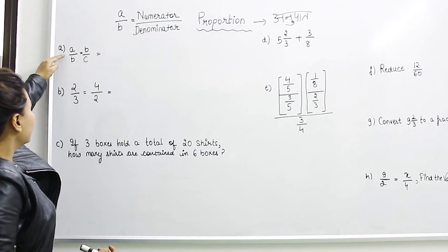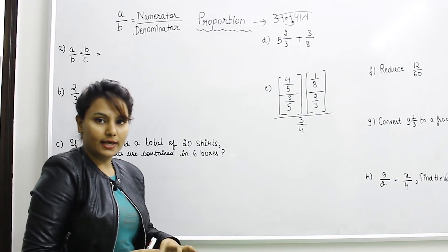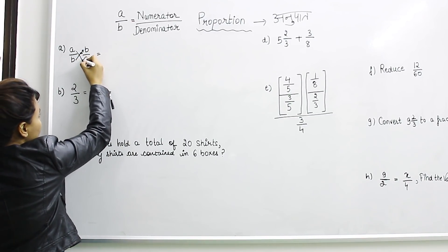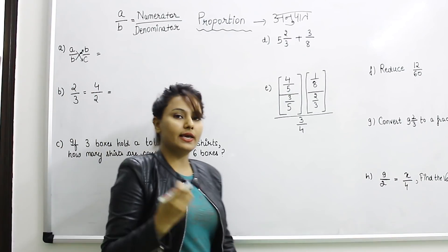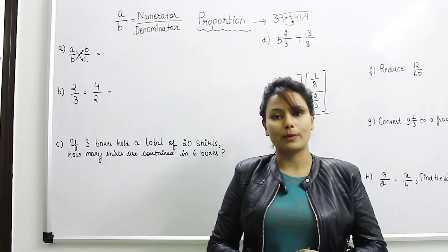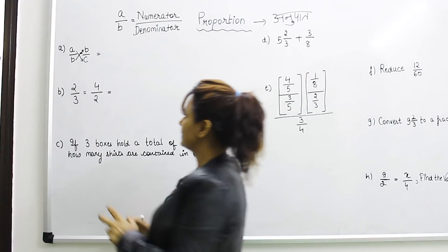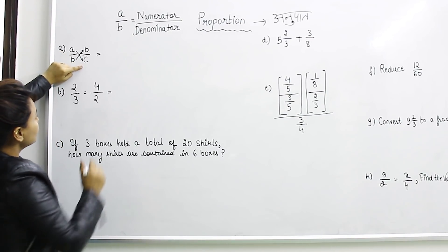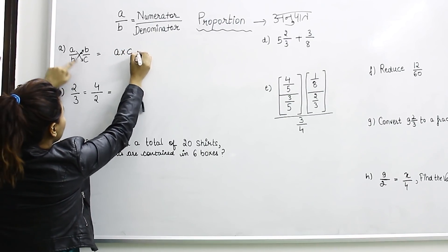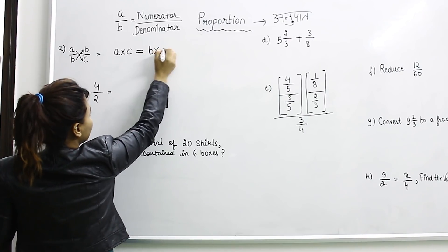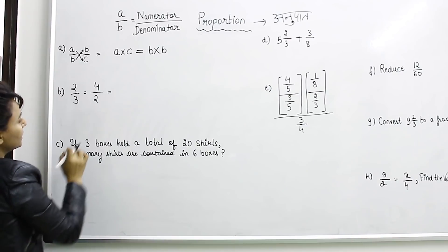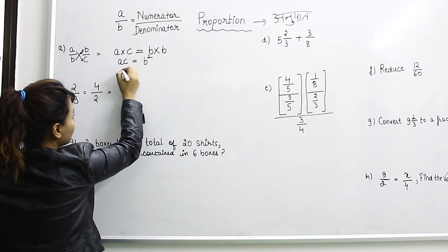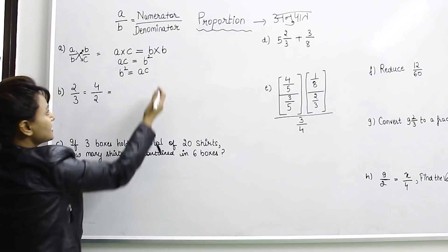So let's proceed with proportion: A by B equals B by C. For proportion, we use cross multiplication. Cross multiplication means this digit will multiply with that one. When you have A by B equal to B by C and you cross multiply, A multiplies with C and B multiplies with B, giving you B squared. So cross multiplying gives us AC equal to B squared.